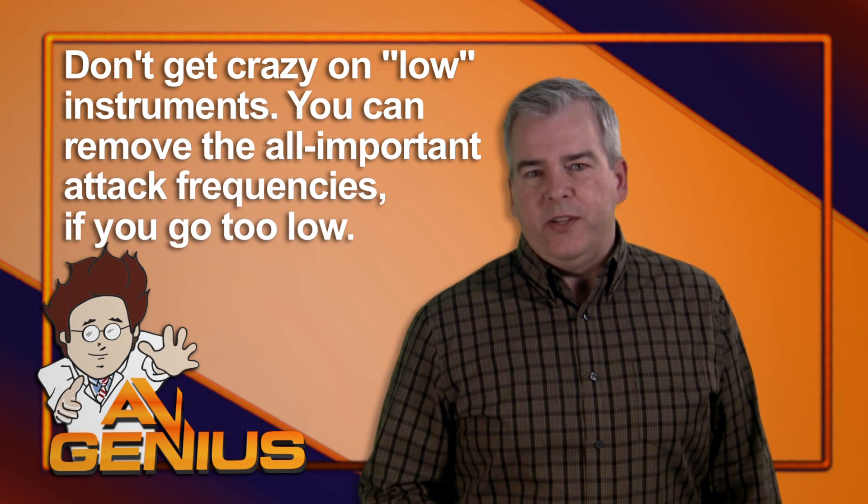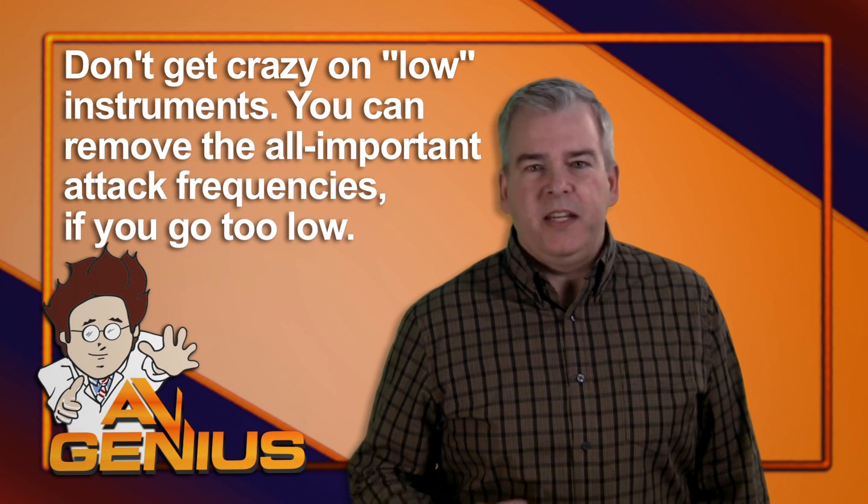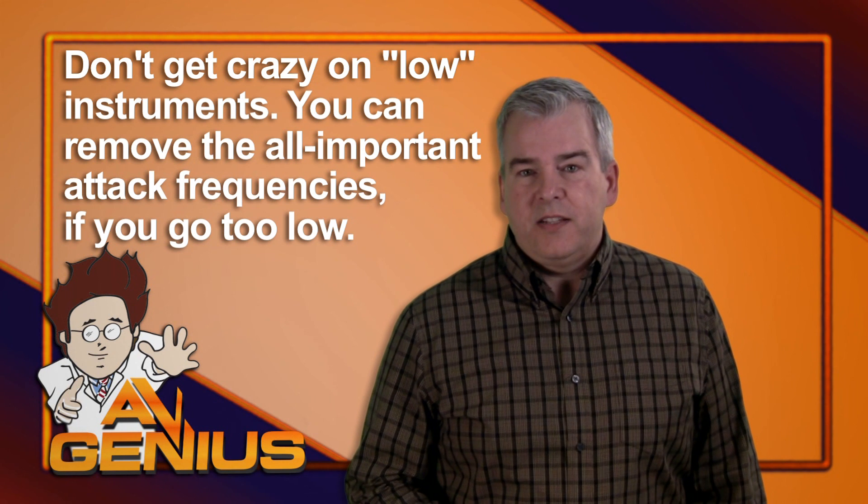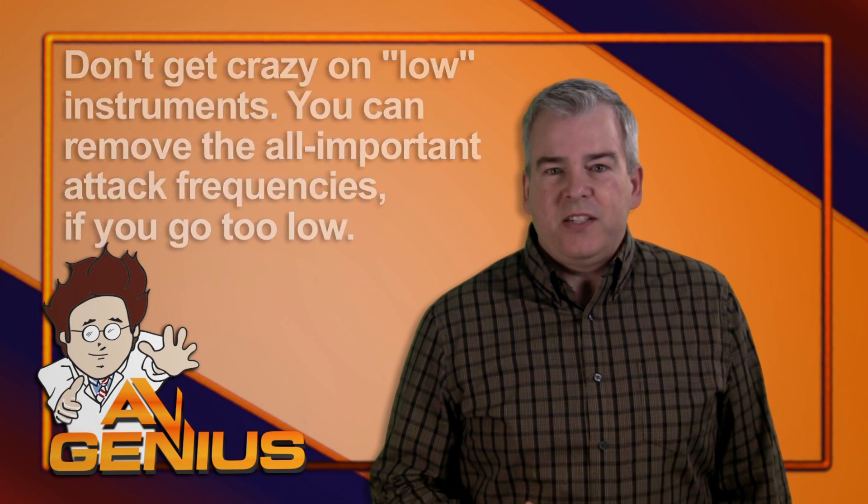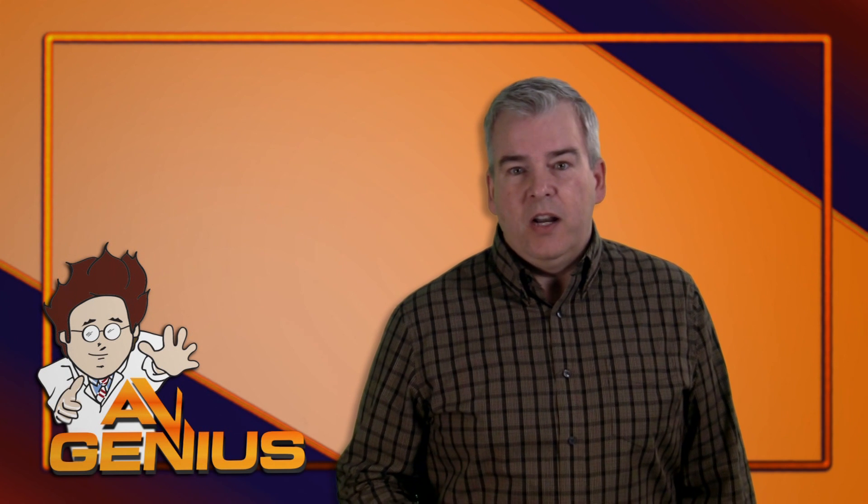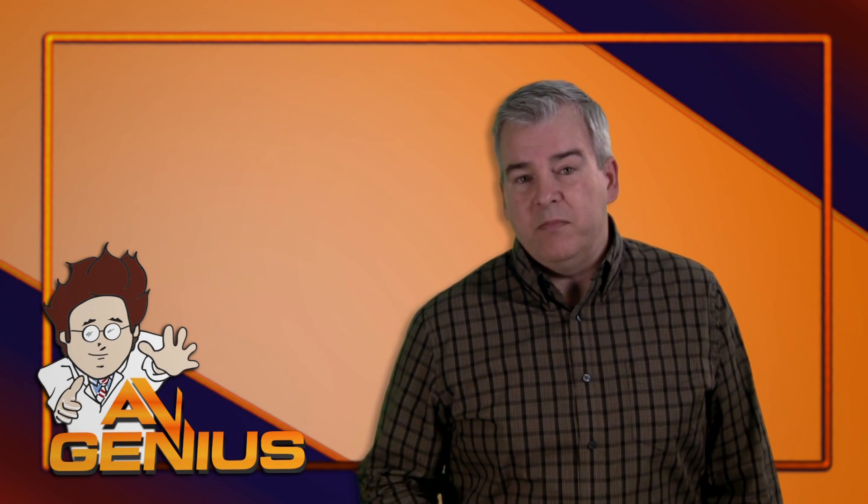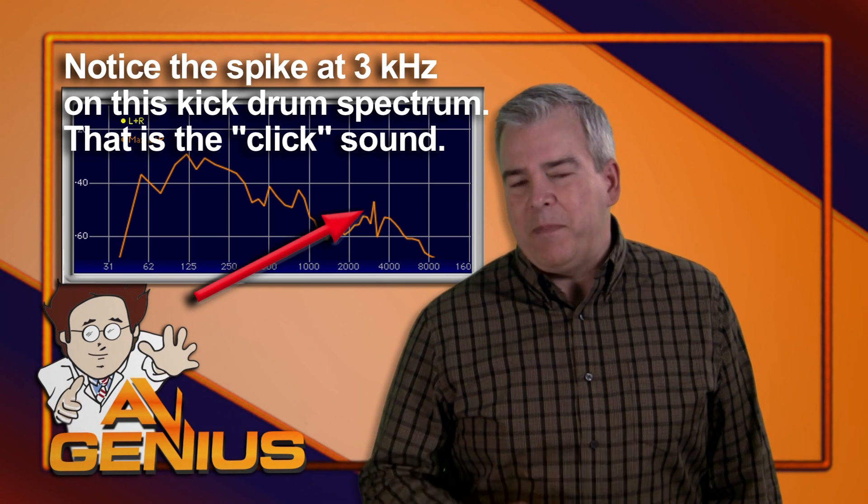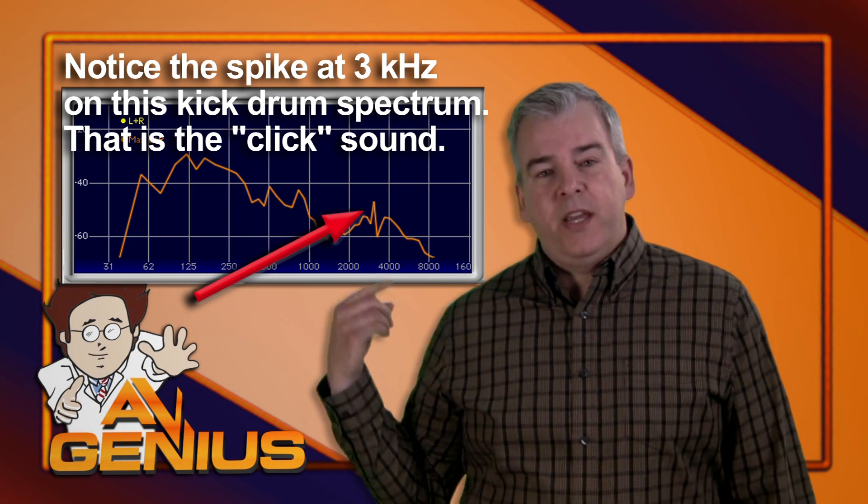Be careful on the low instruments, though, like bass and kick drum. Don't assume you can just take out all the highs. You might think that you could set the low-pass to 1 kHz on a bass or a kick drum or toms, but that will take away the all-important attack sound that happens in the 2 to 4 kHz range.